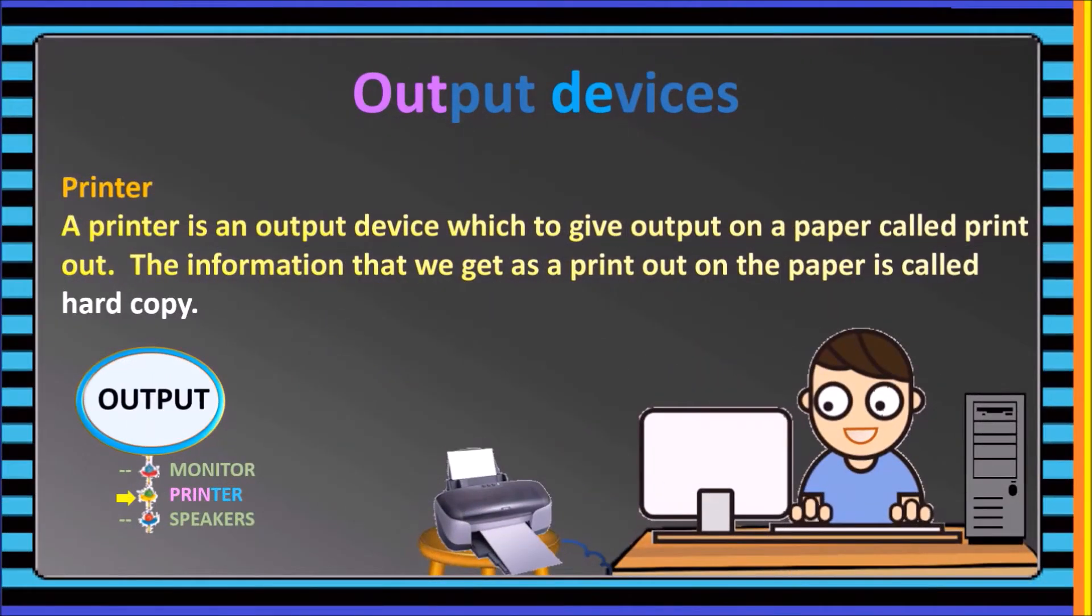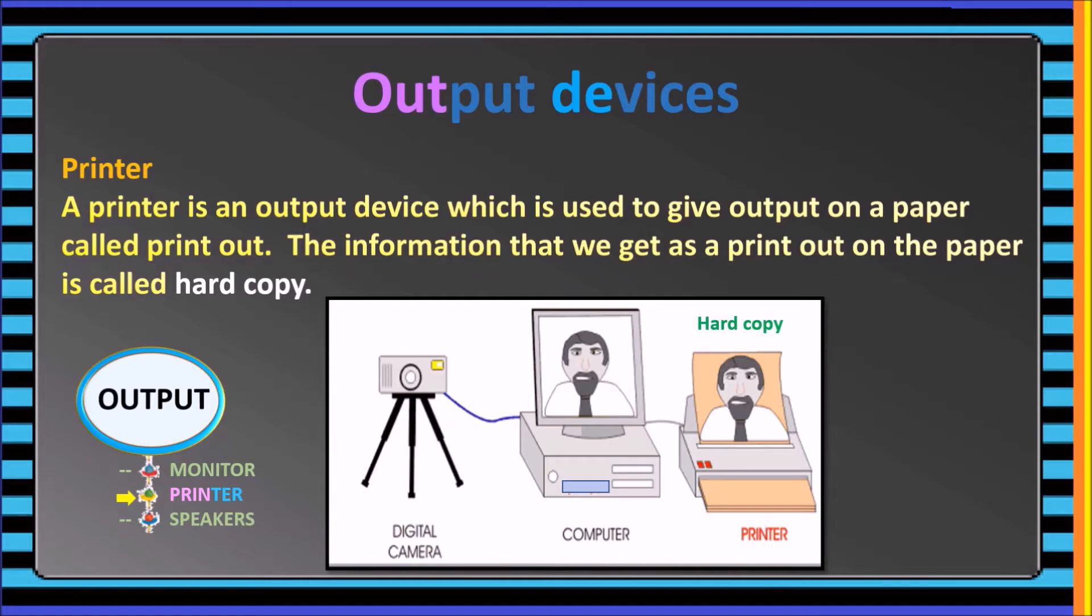Printer. A printer is an output device which is used to give output on a paper called printout. The information that we get as a printout on the paper is called hardcopy.